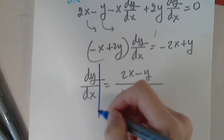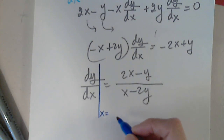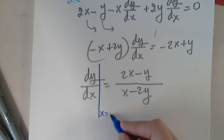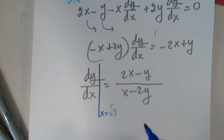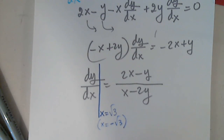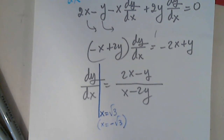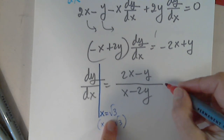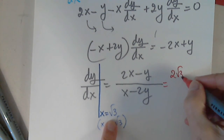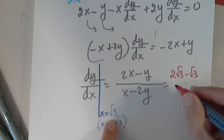All I have to do now is plug in x equals the square root of 3, and later I will plug in x equals negative the square root of 3 to see what happens. If the results are not the same, I have to go back to the drawing board. So I'm going to plug in the square root of 3: 2 times the square root of 3 minus the square root of 3.